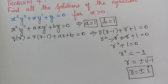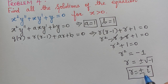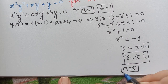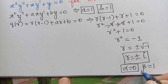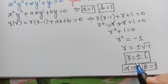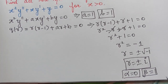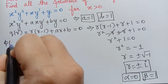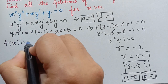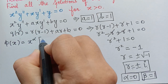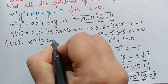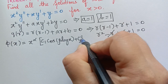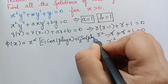Here r is an imaginary root of the form α ± βi, where α = 0 and β = 1. We have already seen that when the roots are imaginary, the general solution φ(x) is given by x^α · (c1·cos(β·log x) + c2·sin(β·log x)).